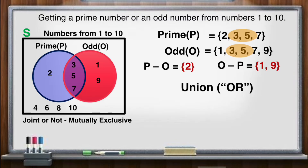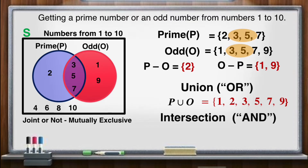Now let's illustrate the union. P union O — the elements of P union the elements of O are 1, 2, 3, 5, 7, and 9. Now let us have their intersection — the intersection of prime and odd numbers. These are the common numbers at the middle. The elements are 3, 5, and 7.